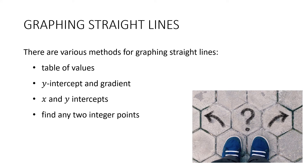There are various methods for graphing straight lines, and some of them you've done before. Last year you would have learned how to do table of values and the y-intercept and gradient method. We're going to go over those in this video, and then look at how to graph a straight line through x and y-intercepts, and finally look at those difficult lines where we're just hoping to find any two integer points.